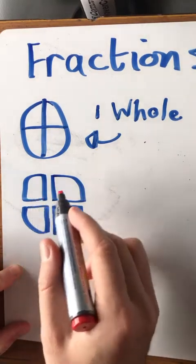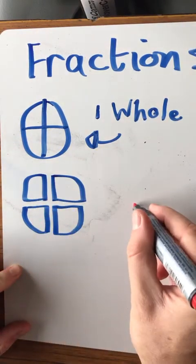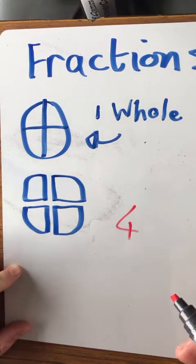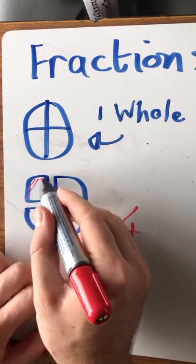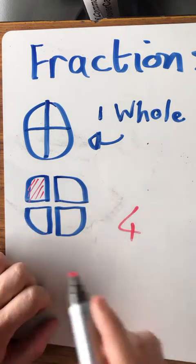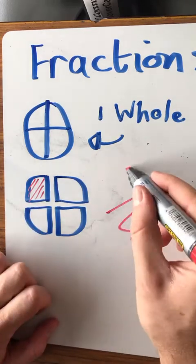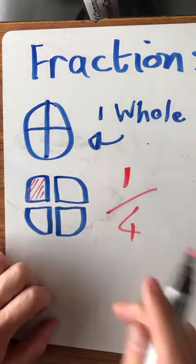These four parts all join together to make one whole. There are one, two, three, four parts. And if I shade in one of them, so if this is my piece of cake, I have one out of the four parts.